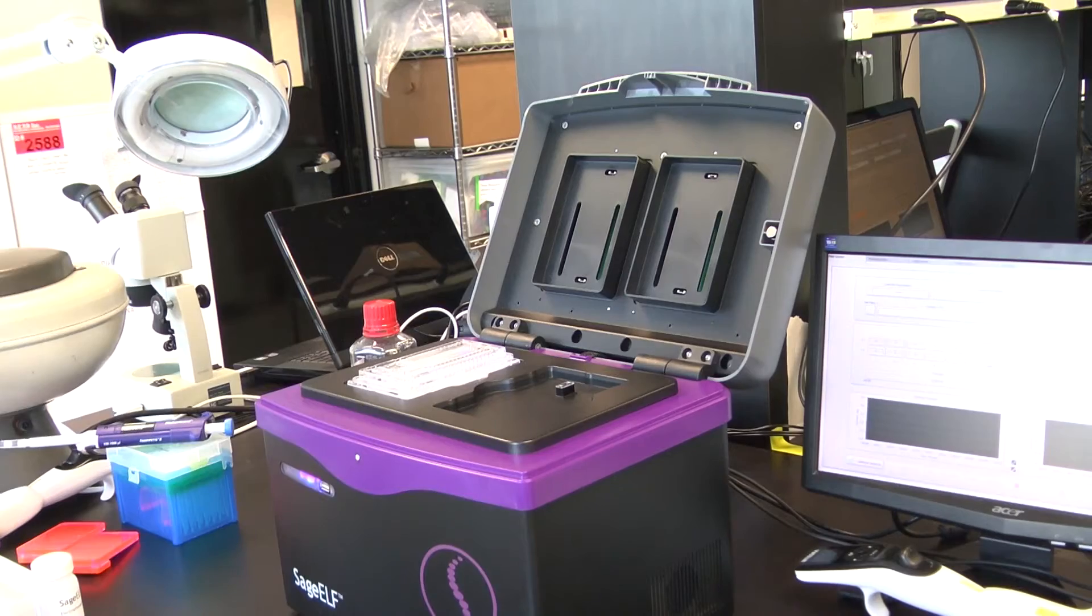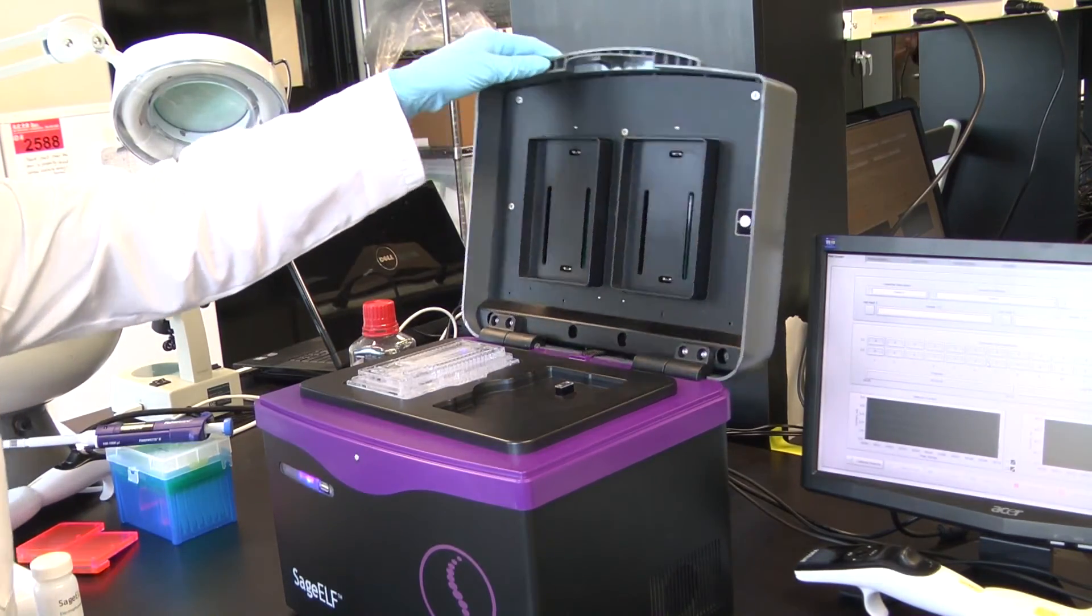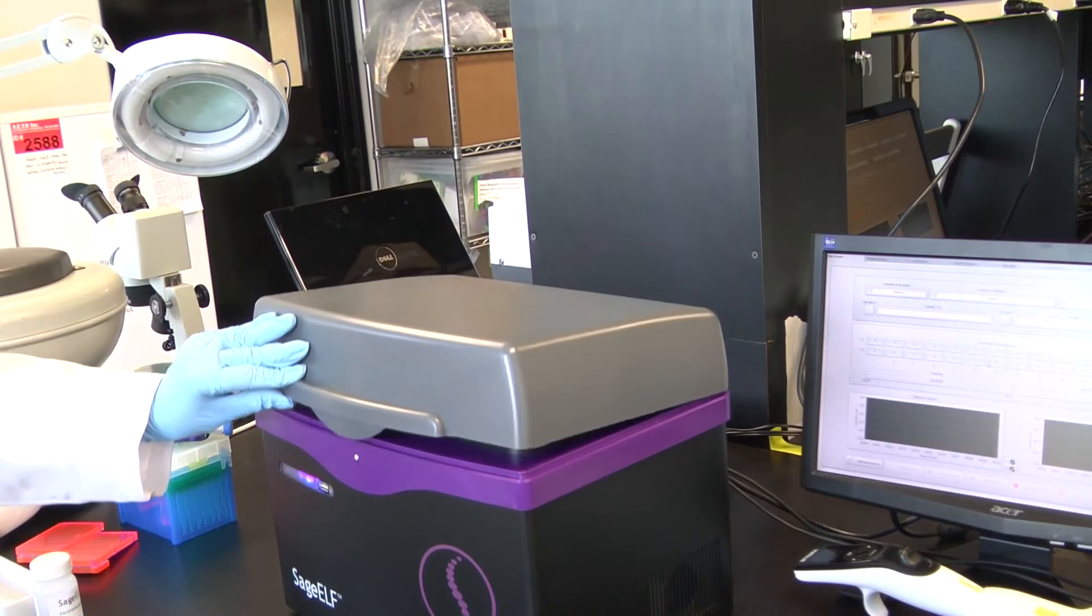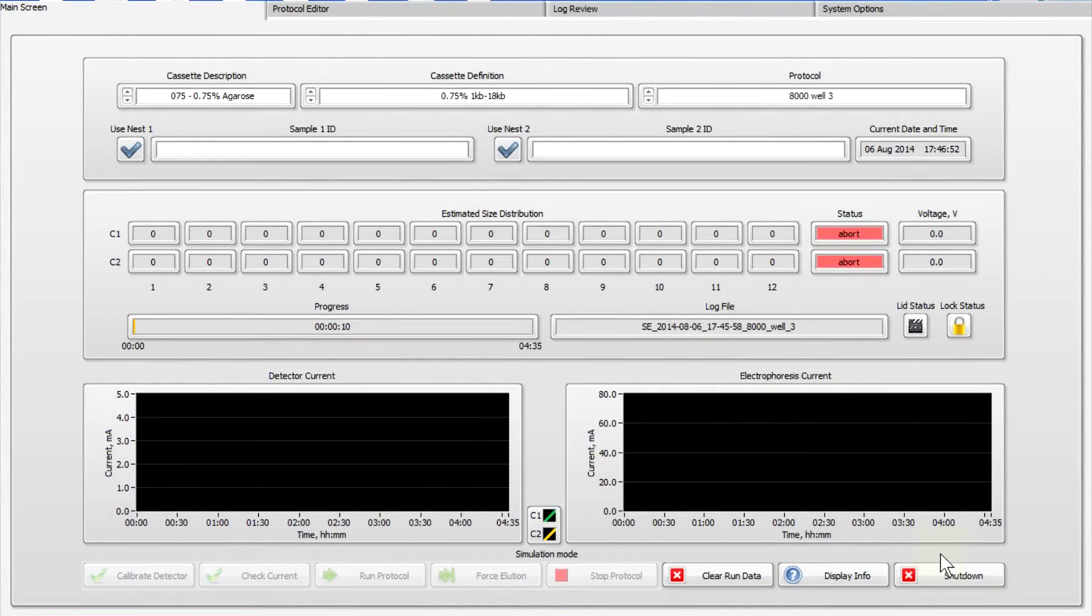Move on to the electrophoresis current test. Close the lid. Press the Clear Run Data button. Select the appropriate cassette description, cassette definition and protocol that will be run.